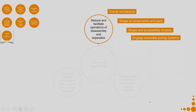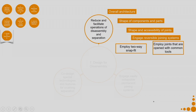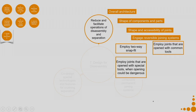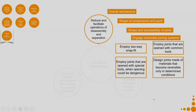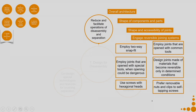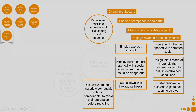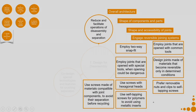Then engage reversible joining systems: employ two-way snap-fit, employ joints that are opened with common tools, or employ joints opened with special tools when opening could be dangerous. Design joints made of materials that become reversible only in determined conditions. Use screws with hexagonal heads. Prefer removable nuts and clips to self-tapping screws. Use screws made of materials compatible with the joining components to avoid separation before recycling.